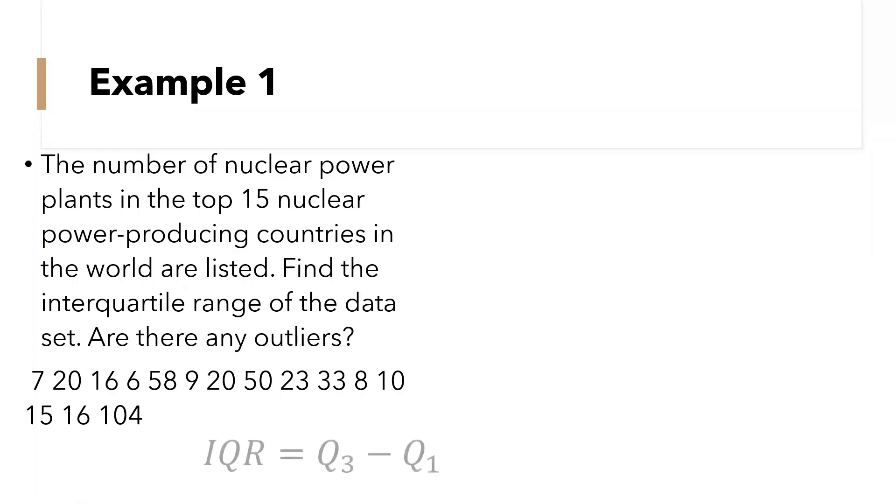So the formula for finding the interquartile range again is Q3 minus Q1, or that is quartile 3 minus the quartile 1. So the first thing that we need to do is to arrange the data in ascending order.